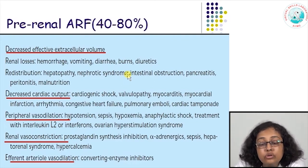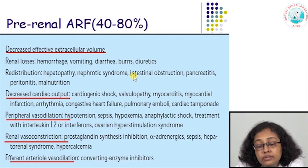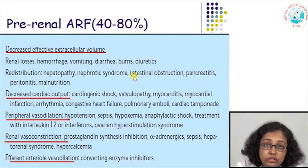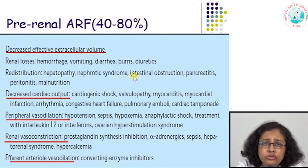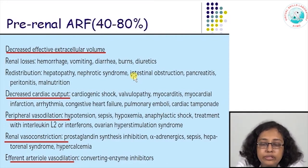Sometimes there could be renal vasoconstriction due to hypercalcemia, hepatorenal syndrome, or prostaglandin synthesis inhibition. Sometimes drug-induced efferent arteriolar vasodilatation reduces blood reaching the renal glomeruli — a common cause being the use of angiotensin-converting enzyme (ACE) inhibitors, a commonly used drug in medicine.